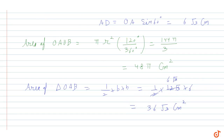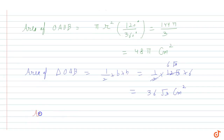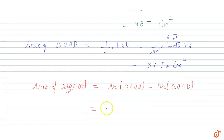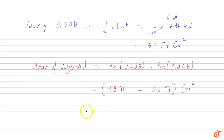The area of the segment equals the area of sector OAUB minus the area of triangle OAB. That is 48π minus 36√3. Using π = 3.14 and √3 = 1.73, this gives 150.72 minus 62.28. So our segment area is 88.44 cm².